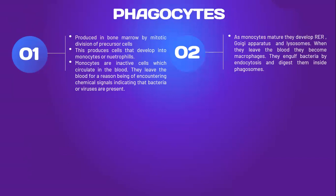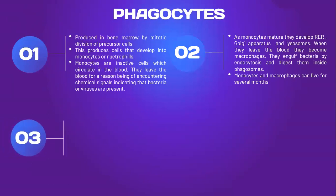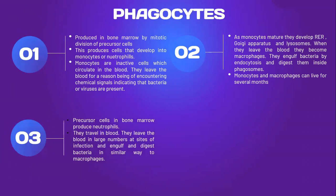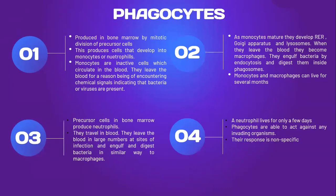Macrophages engulf bacteria by endocytosis and digest them in a similar way. Neutrophils live for only a few days. Monocytes and macrophages can live for several months, and precursor cells in bone marrow produce neutrophils which travel in the blood. They leave the blood in large numbers at sites of infection and engulf and digest bacteria. Phagocytes are able to act against any pathogen and their response is non-specific.